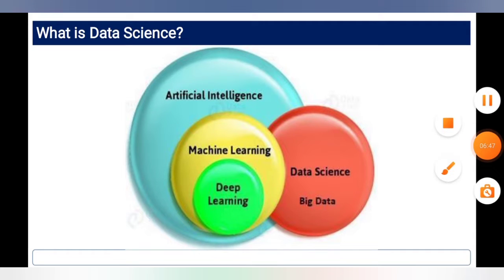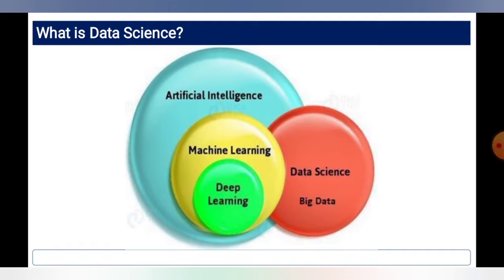Data science is not the main part of artificial intelligence, but they require each other — data science requires artificial intelligence, or vice versa, artificial intelligence requires data science, in order to process things and carry out results.